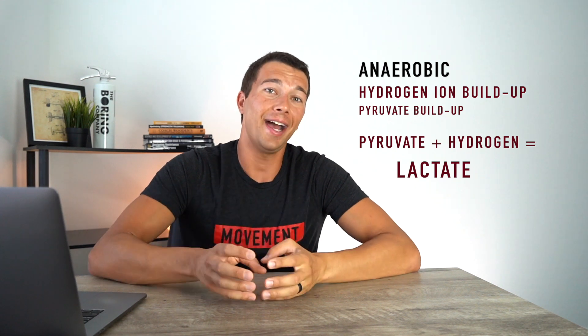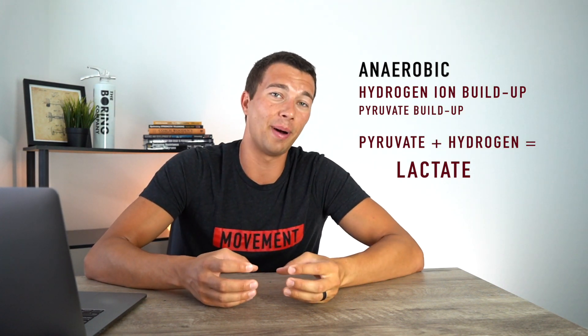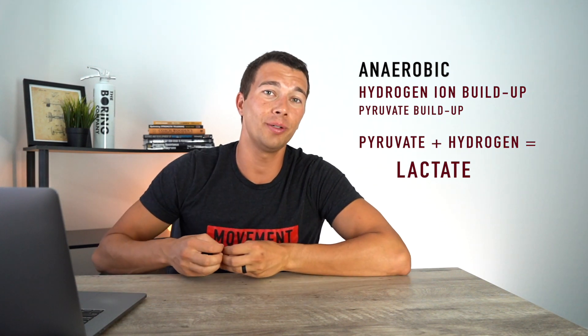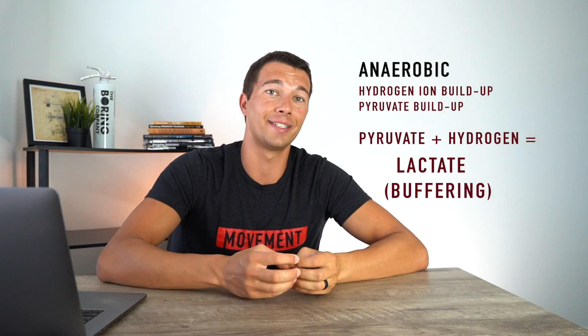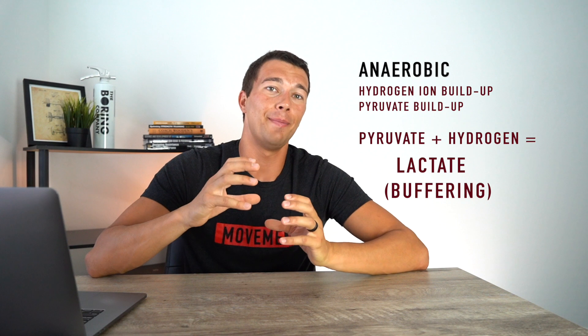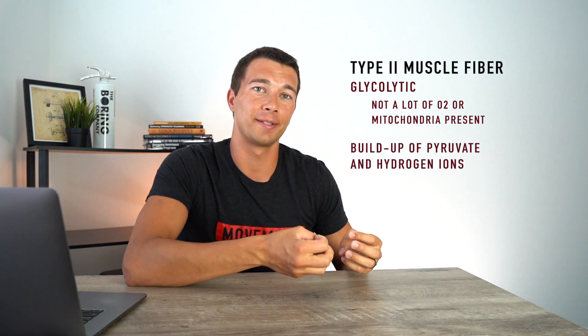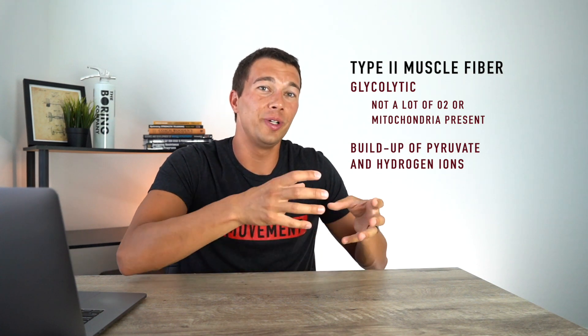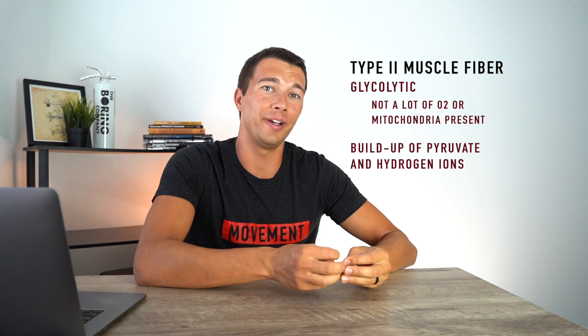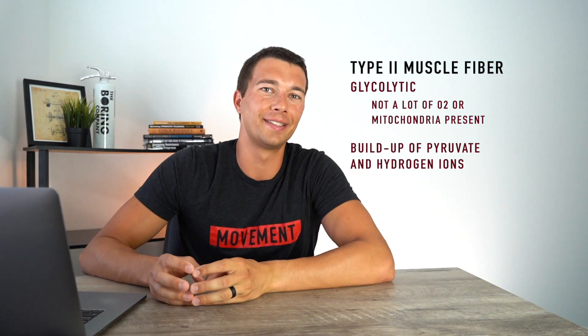In fact, the formation of lactate — combining pyruvate with hydrogen ions and transporting it out of the bloodstream — is actually buffering. Lactate is buffering hydrogen ions out of the bloodstream, bringing the pH back up toward baseline and making it less acidic. Why does it need to do that? When we're in a type two muscle fiber, it's very glycolytic — not a lot of mitochondria, not a lot of oxygen present. It's burning through ATP, building up pyruvate and hydrogen ions, but that's not where the mitochondria or oxygen are. So we need to take those hydrogen ions and pyruvate and move them to where the mitochondria actually is — and that's what lactate is doing. It takes the hydrogen ion, buffers it with the pyruvate, and transports it to somewhere that mitochondria and oxygen are present.